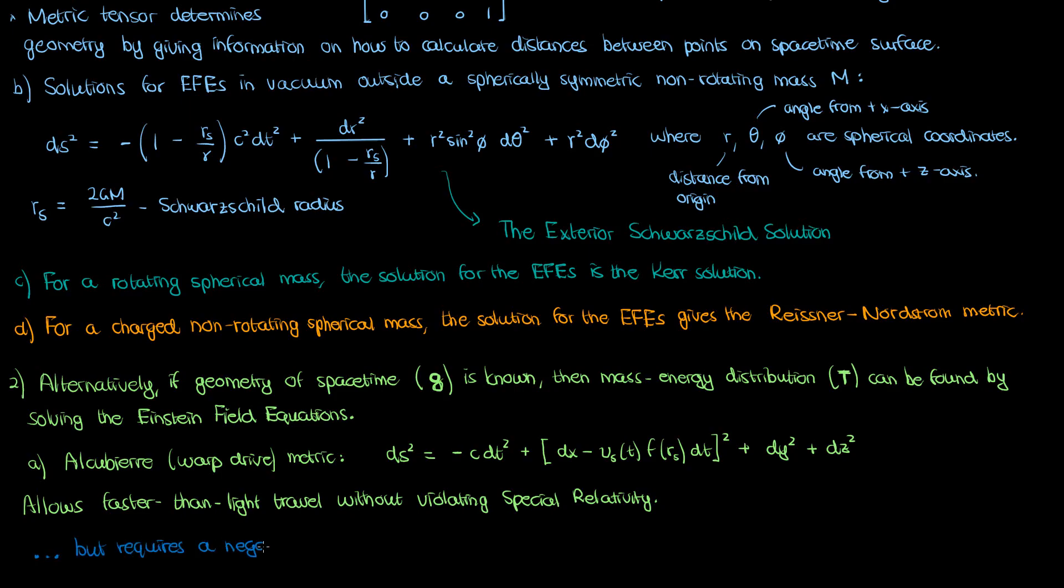The most notable one is that in order to generate this Alcubierre geometry, you need a negative energy density, which isn't physically possible. Well, it might be if you look at, say, Casimir vacuum energy, but there's no practical way to harness that and create such a warp drive. And the way to show that you need a negative energy density is to solve the Einstein field equations, which is what Alcubierre did in his 1994 paper where he first discussed this warp drive metric.